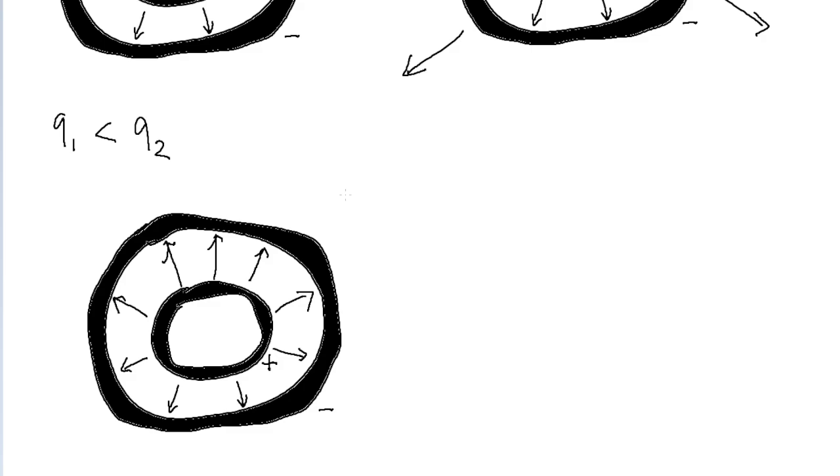The logic we used for the previous part still kind of applies here, but in reverse. Since the outer shell has a large charge magnitude, that means that all of the electric field from the inner shell can terminate at the outer shell, but because the outer shell still has additional negative charge, that means that more electric field lines can terminate at that outer shell. So we can do the same thing we did for the previous part, but with the electric field lines pointing towards the outer shell, because there is now more room for additional electric field to terminate at this outer shell.